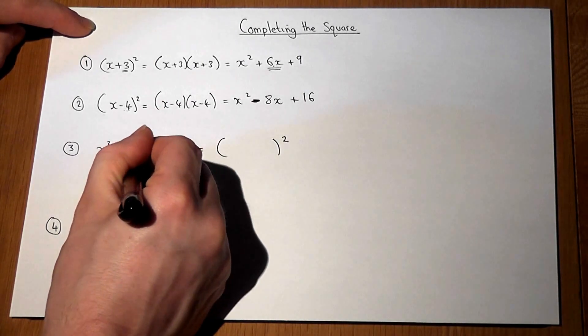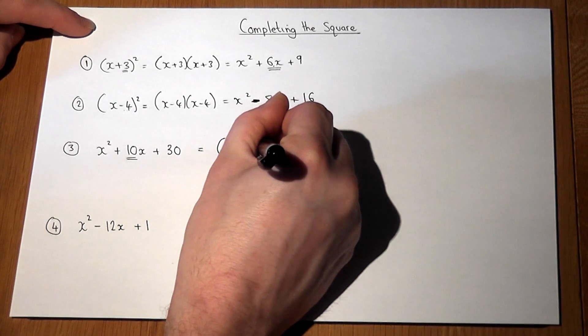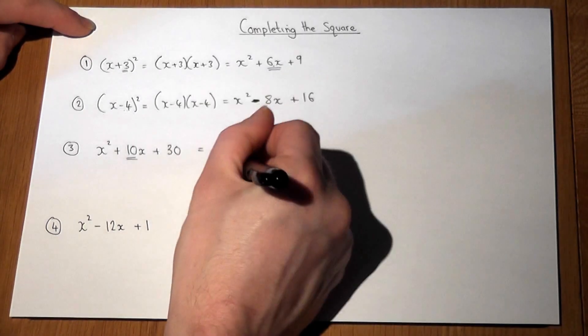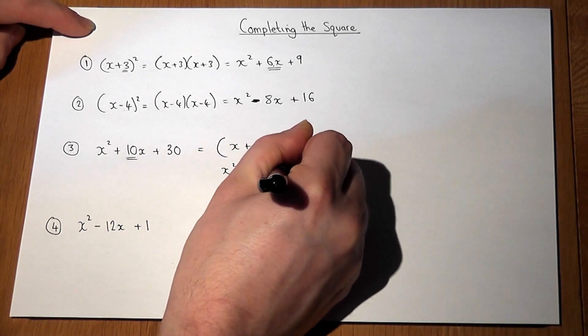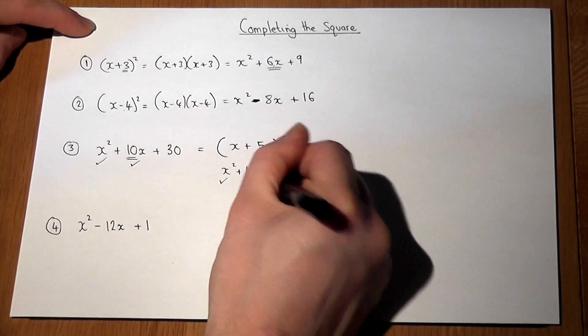Now we've got a 10 here. So if we halve that, we get (x + 5)². Because if this expands, we get x² + 10x + 25. So the x² term matches off, the 10x matches off.